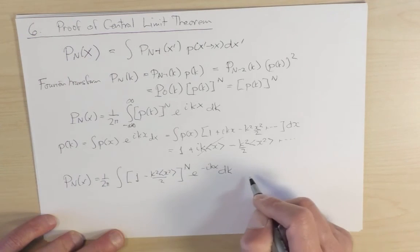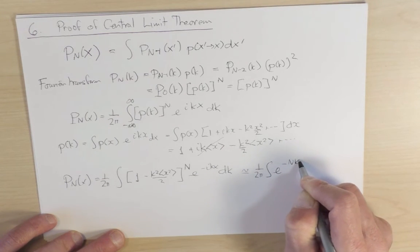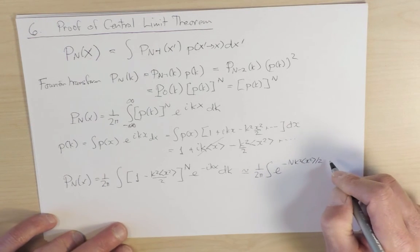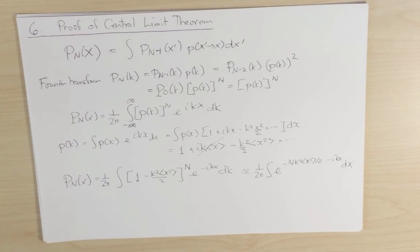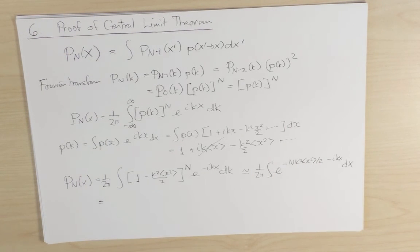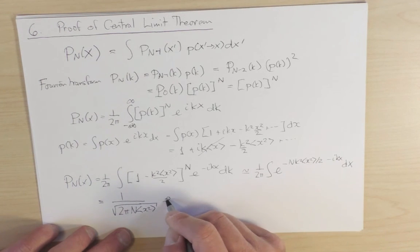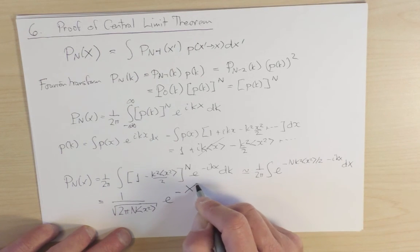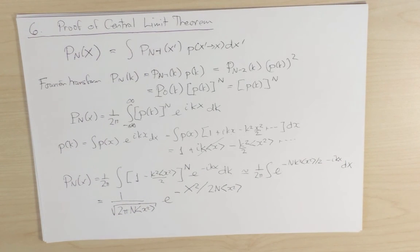This is asymptotically going to 1 over 2 pi, e to the minus n k squared x squared average over 2 times e to the minus i k x dx. Now I make use of the fact that the Fourier transform of a Gaussian function in k is a Gaussian function. I finally end up—I'm skipping all the simple algebraic steps, which I leave as an exercise for the student—with 1 over the square root of 2 pi n x squared average times e to the minus x squared divided by 2 n x squared average. This is just the central limit theorem for the case of a symmetrical walk in which the mean displacement in a single step is zero.